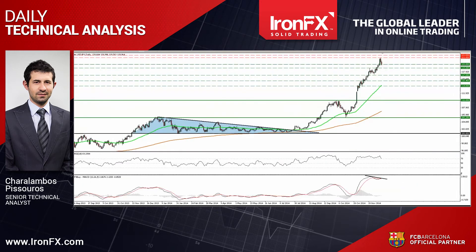On the daily chart, the price structure still suggests an uptrend. However, our daily momentum indicators corroborate my view that further correction could be in the works. The 14-day RSI looks ready to exit its overbought field, while the MACD, although positive, fell below its trigger. I also see negative divergence between the MACD and the price action.